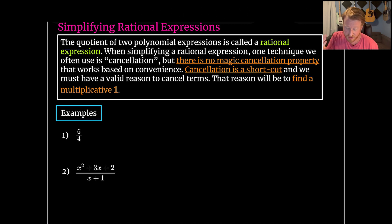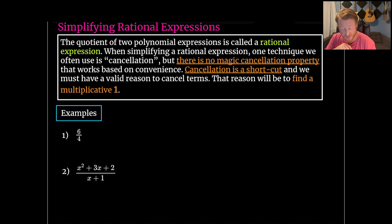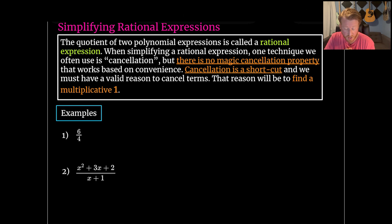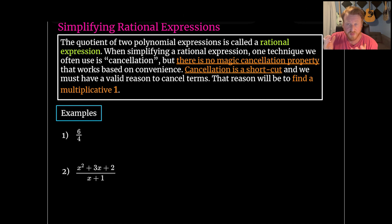We'll look at a couple of examples to illustrate that. Starting off very simple with the fraction six over four. The idea is that there is something that can reduce. We can factor these numbers down to their most basic parts — their prime factors — and then use those to find multiplicative ones and cancel.